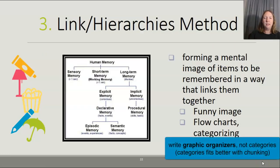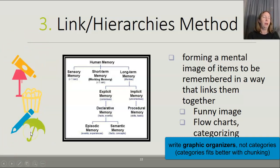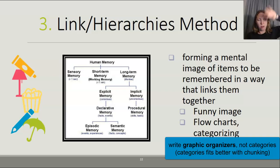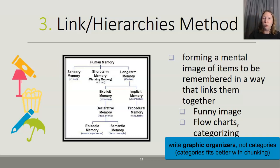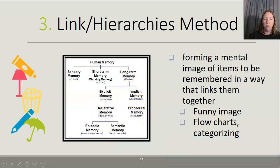The link or hierarchies method is when you form a mental image of items to remember in a way that links them together. Going back to milk, scotch tape, and a light bulb — maybe you picture a gallon of milk with a light bulb on top at the opening, taped up. You go to the store, picture that funny image, and remember your whole grocery list. More commonly, this looks like a flow chart, categories, or a graphic organizer — breaking concepts into groups so you're more likely to remember them.